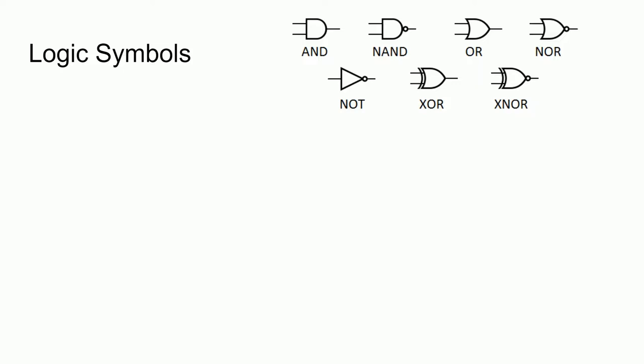These are important to know and recognize when looking at implementation diagrams and circuits for different components. We have the primitive logic component gates: AND, NAND, OR, NOR, NOT, XOR, and XNOR. These are all binary operations taking two inputs and producing a single output, with the exception of the NOT gate, which is unary and only takes one input.